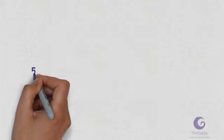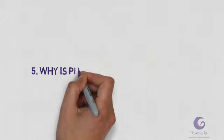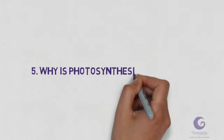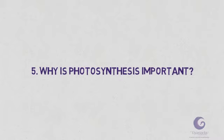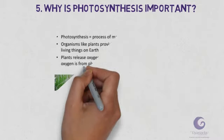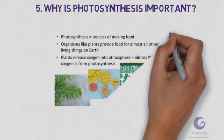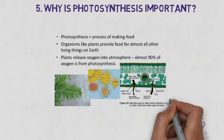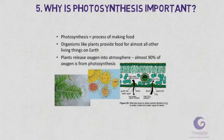Now we have the last question: why is photosynthesis important? Here we can see three points basically. Photosynthesis is the process of making food. Organisms like plants provide food for almost all other living things on earth. And very importantly, plants release oxygen into the atmosphere. Almost 90% of oxygen is from photosynthesis. Plants play a very important role in continuity of life on the planet, and all thanks to photosynthesis for that.